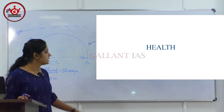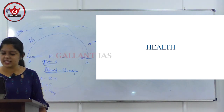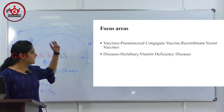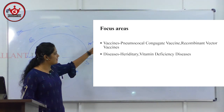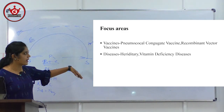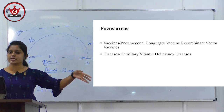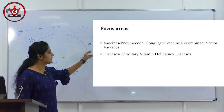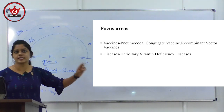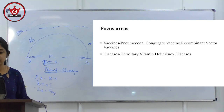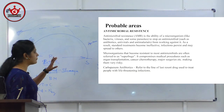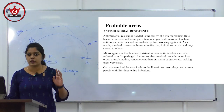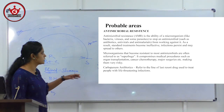Moving on to health and diseases. From previous question papers we have vaccines, pneumococcal conjugate vaccine, recombinant vector vaccine — less chance of asking again. Hereditary diseases, vitamin deficiency diseases are important. A probable area is antimicrobial resistance, which was in news for the last one to two years.